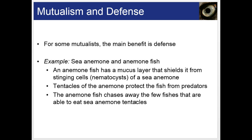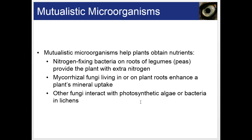For some mutualists, the main benefit is defense — like the sea anemone and the anemone fish. The anemone fish has a mucus layer that shields it from the stinging cells, or nematocysts, of the sea anemone. The tentacles of the anemone protect the fish from predators, while the anemone fish chases away the few fish that can eat sea anemone tentacles. Mutualistic microorganisms also help plants obtain nutrients, like nitrogen-fixing bacteria on the roots of legumes, mycorrhizal fungi that enhance a plant's mineral uptake, and fungi that interact with photosynthetic algae and bacteria in lichens.